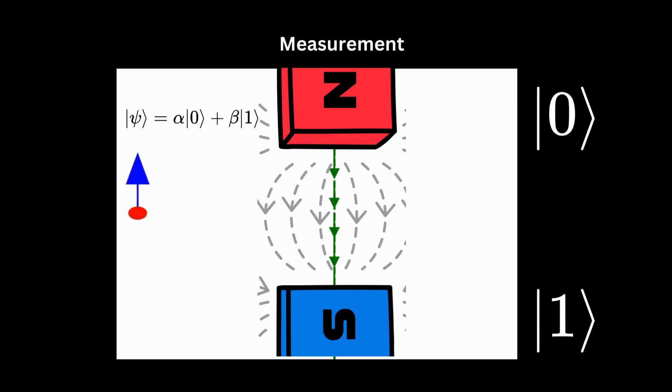Using neutral silver atoms is crucial. It minimizes the large deflections typically observed in charged particles moving through a magnetic field, allowing the experiment to focus on spin-dependent effects.